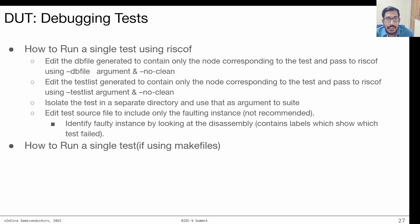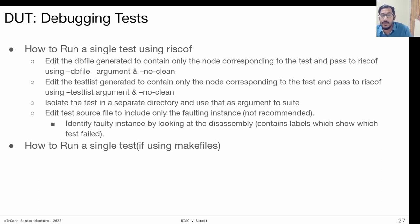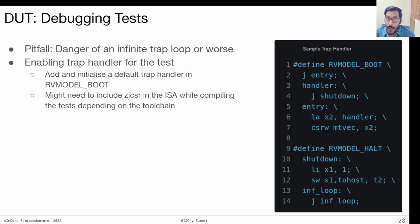If you're using the make utility, each single test translates to a single target in the make file, so you can identify that particular target and run just that one test. However, in this case RISCOFF is not running, so you won't be able to compare signatures automatically via RISCOFF from the reference model. There is also one pitfall to address in the way the current ACTs are set up.